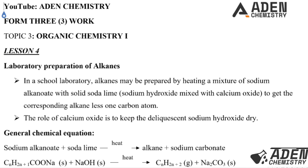In a school laboratory, alkanes may be prepared by heating a mixture of sodium alkanoate with solid soda lime. Soda lime is a mixture of sodium hydroxide and calcium oxide. The role of calcium oxide is to keep the deliquescent sodium hydroxide dry — it acts as a drying agent.